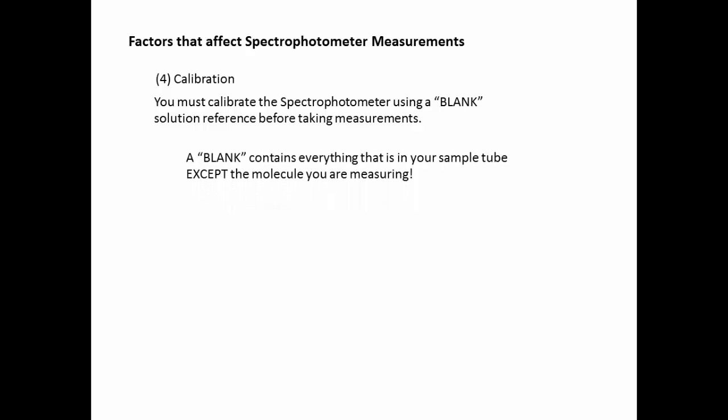Another thing that affects spectrophotometer measurements is calibration. You must not forget to calibrate the spectrophotometer before using it like any measurement device. And we use something called a blank solution as a reference in order to zero out and set the maximum measurement value for calibration. A blank solution contains everything that is also in your sample tube, and also in the same amounts. The only thing it does not contain is the molecule you're trying to measure.